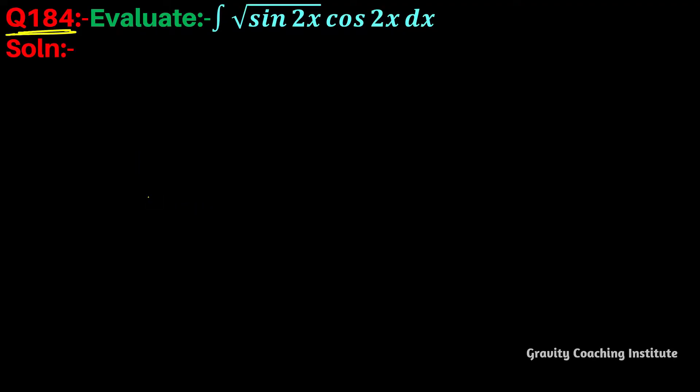Question number 184: Evaluate the integral of √(sin2x)·cos2x dx. First, let I equal to ∫√(sin2x)·cos2x dx. If we differentiate sin2x, we get cos2x.